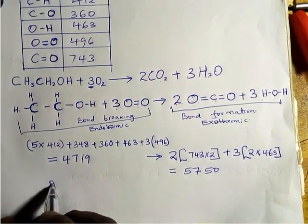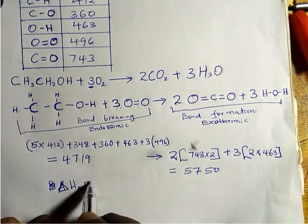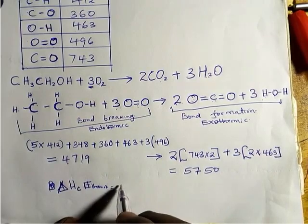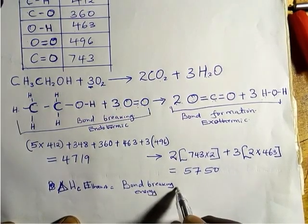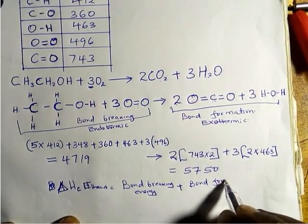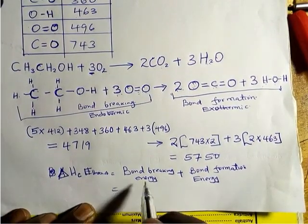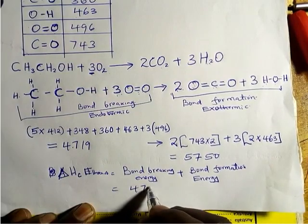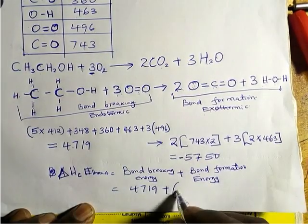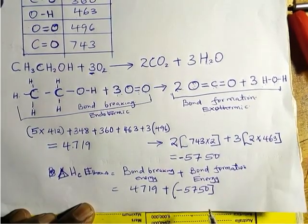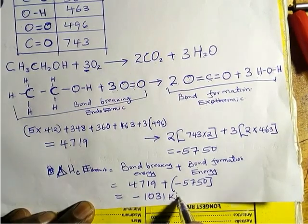The enthalpy change of combustion of ethanol equals bond breaking energy plus bond formation energy. Bond breaking is endothermic, so we use +4719. Bond formation is exothermic, so it must be negative: −5750. This gives us a final answer of −1031 kJ/mol.